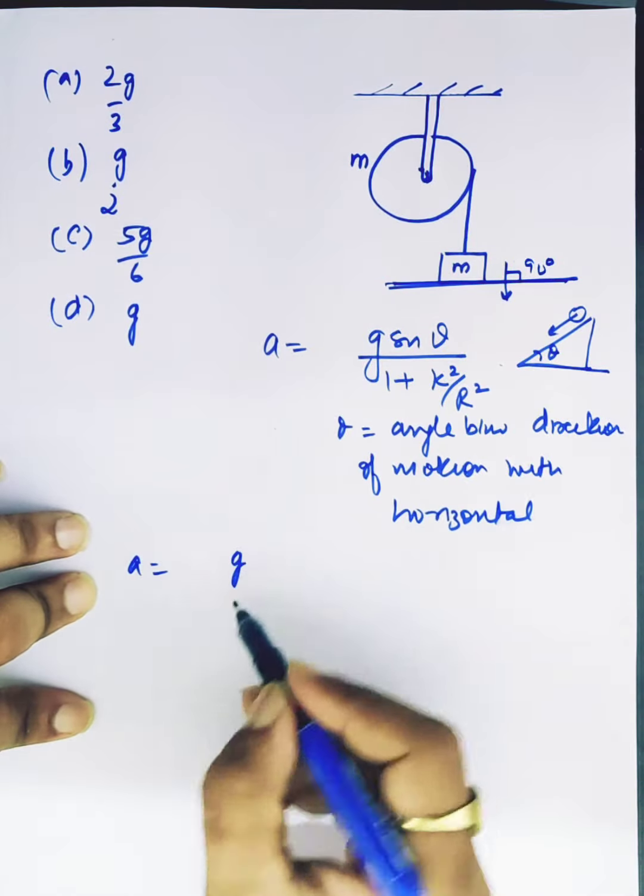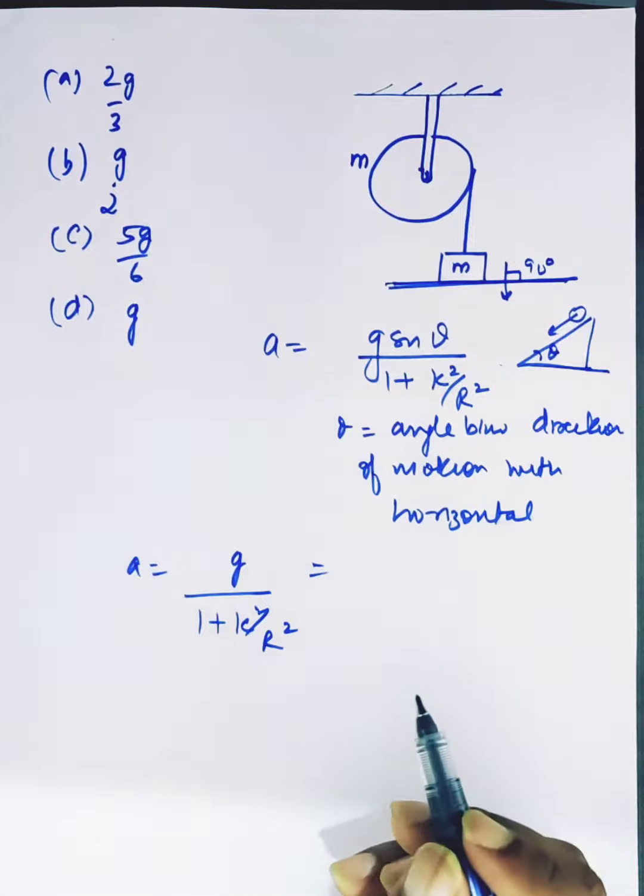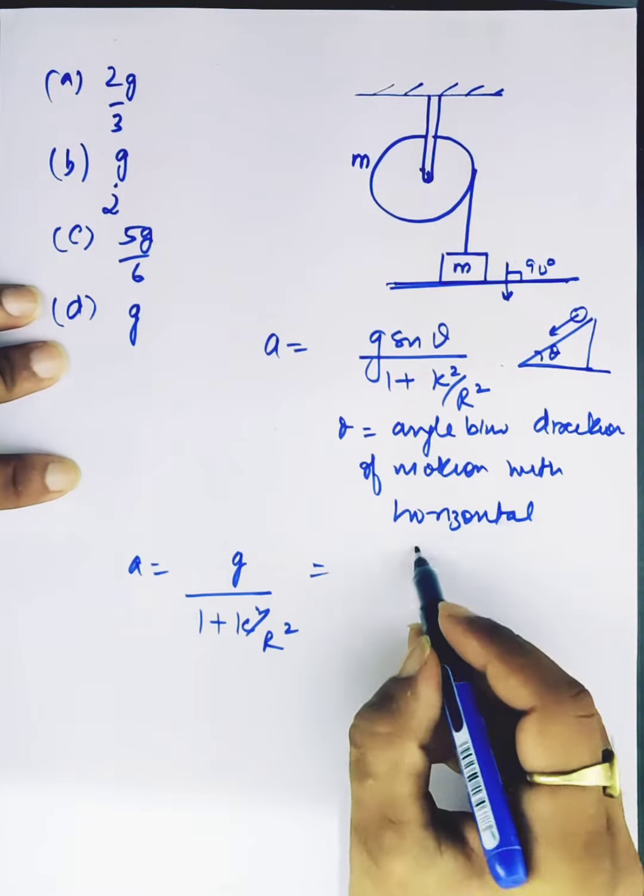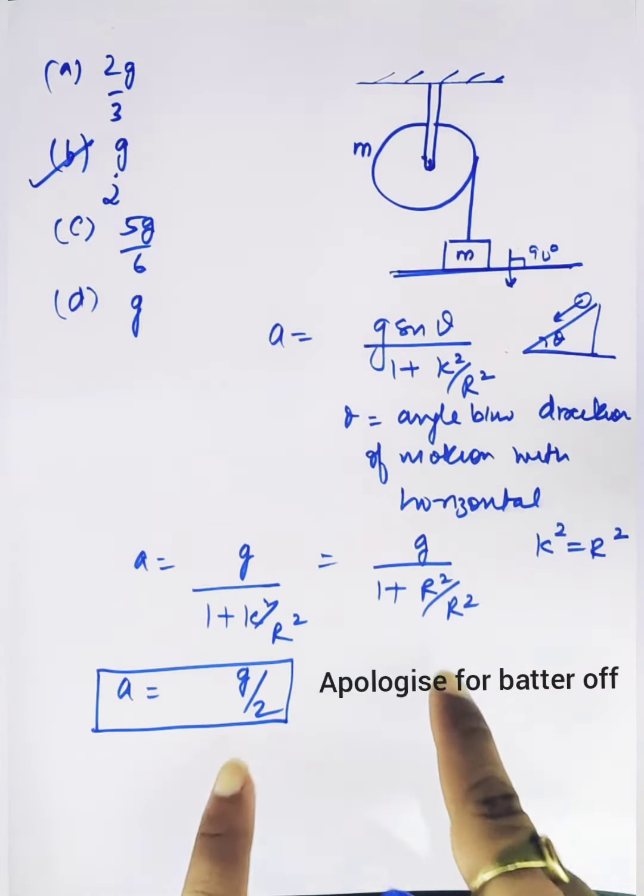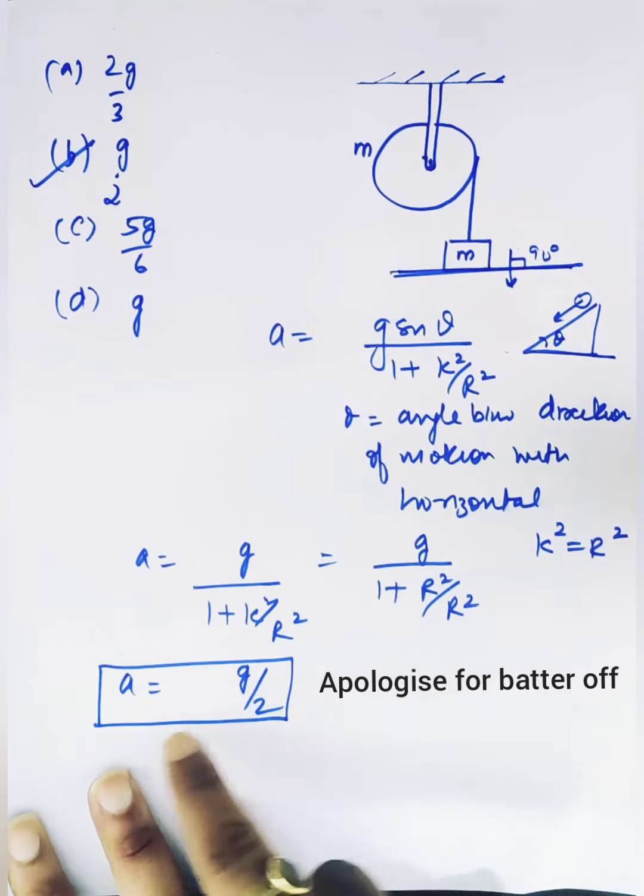That's why g upon 1 plus k² by r² is the final expression. Now what body is this? Hollow cylinder. Hollow cylinder is like a ring, so k² is going to be r². Hence the answer is g by 2.